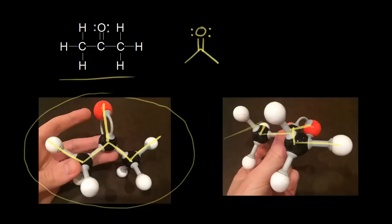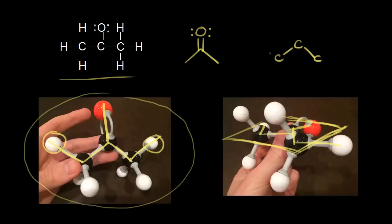That's a little easier to see in the picture on the right - these atoms are all in the same plane. Imagine a sheet of paper, and all of those atoms are in the same plane of that paper. We could draw our three carbons, and these two hydrogens and the oxygen are in the plane of the page.